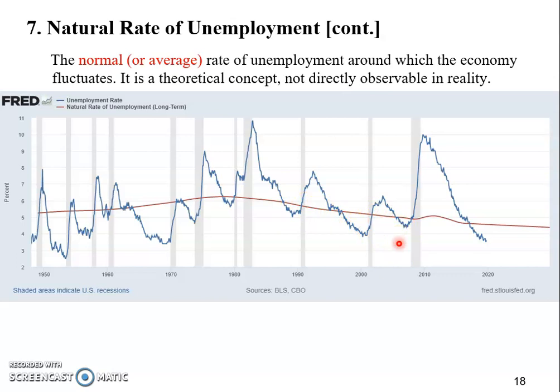Another analogy to understand the natural rate is the normal body temperature of 98.6°F, which we use to make judgments. For example, if you get the flu and your doctor reads your temperature as 100°F, they'll tell you that you have a fever — because your temperature is above the normal benchmark. Without the red curve representing the natural rate, it would be very difficult to assess how well the economy is doing.